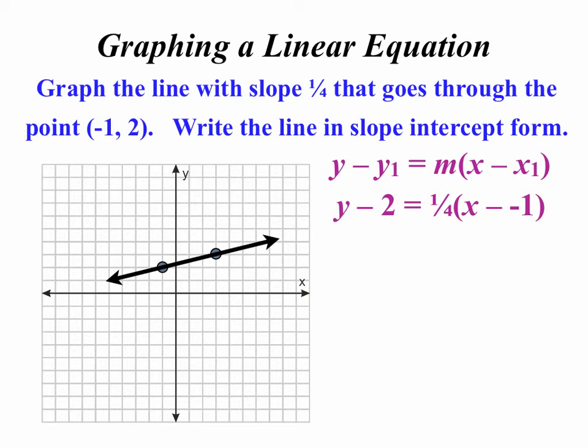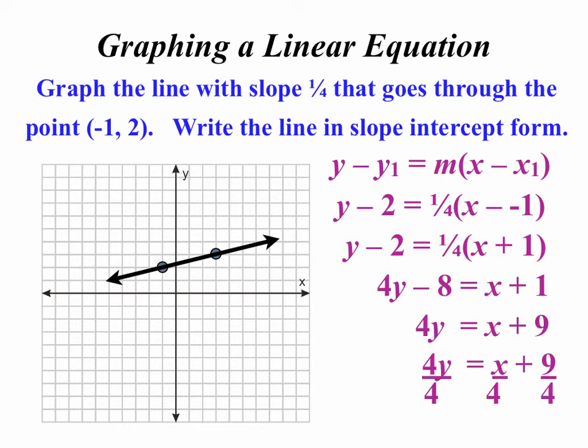Now we're asked to write this equation in slope-intercept form, so we have to do some algebraic manipulation. Start there. My tendency is to clear fractions. I don't care for fractions, so I'm going to multiply all three terms by that denominator of 4. Notice on the right, 1 fourth times 4 is 1, so the entire right-hand side just becomes x plus 1. Now add 8 to both sides. Divide everything by 4, all three terms. And now just write that in y equals mx plus b form, where the slope is 1 fourth and the y-intercept is 2.25.